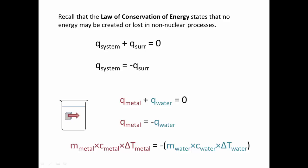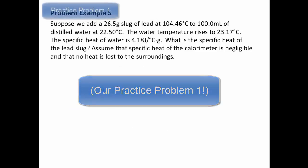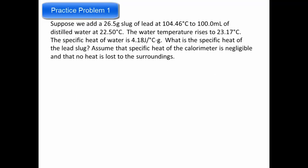So let's apply this in an actual problem. Here we have problem example five. Suppose we add a 26.5 gram slug of lead at 104.46°C to 100.0 milliliters of distilled water at 22.50°C. The water temperature rises to 23.17°C.